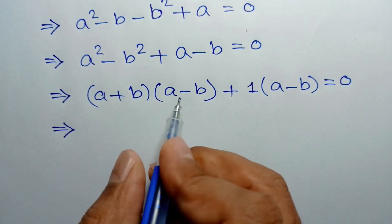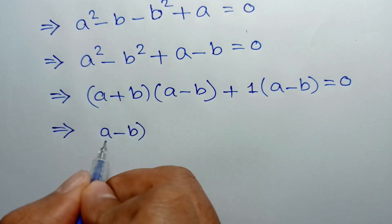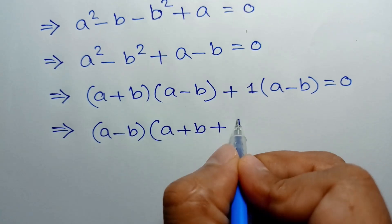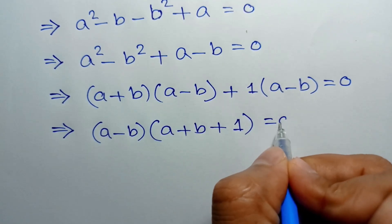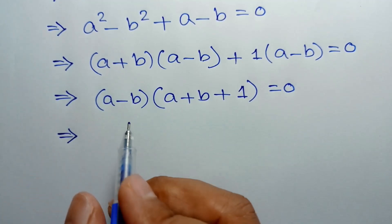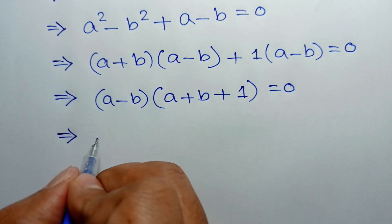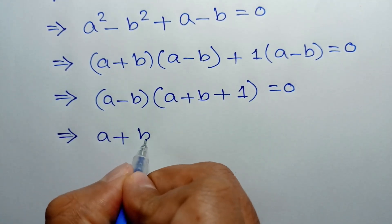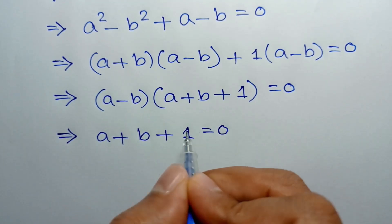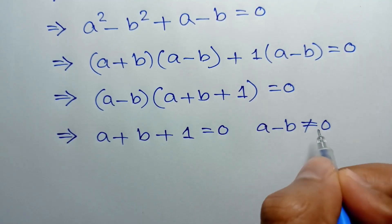Taking common factor A minus B, we can write A minus B times the quantity A plus B plus 1 equals 0. Since A is not equal to B, A minus B is not equal to 0, so we must have A plus B plus 1 equals 0.